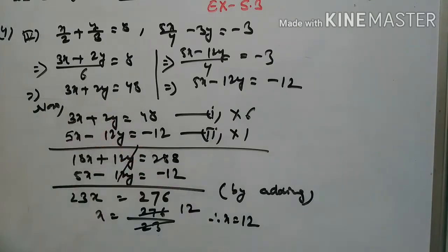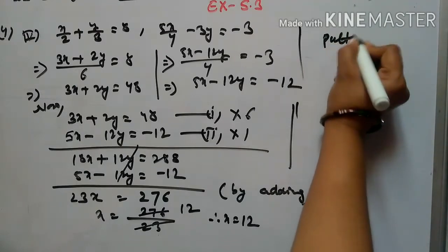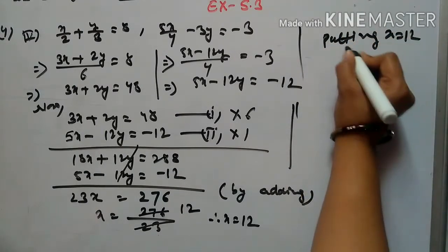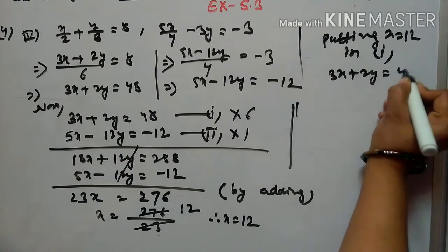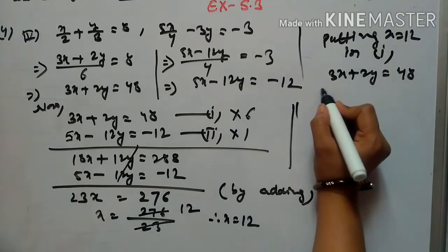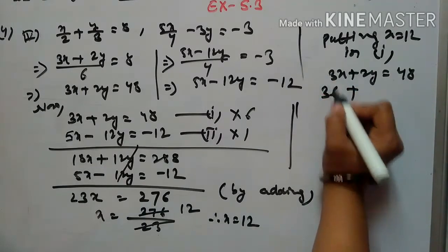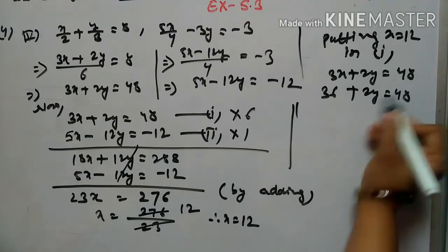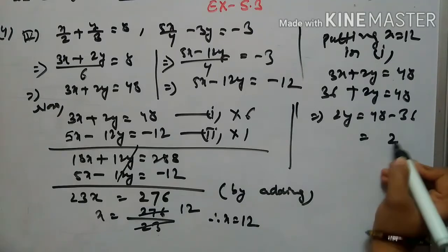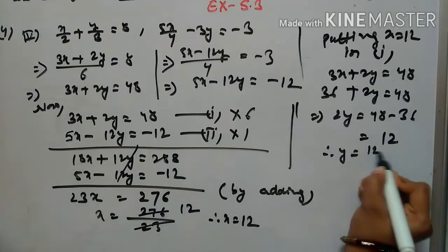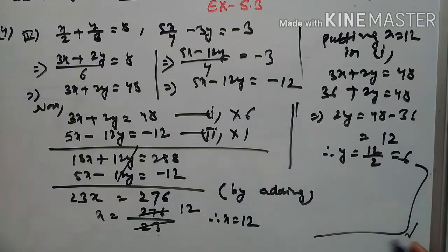Putting x = 12 into equation 1: 3x + 2y = 48, so 3 × 12 + 2y = 48, giving 36 + 2y = 48, therefore 2y = 48 - 36 = 12, so y = 12 ÷ 2 = 6. The value of y is 6.